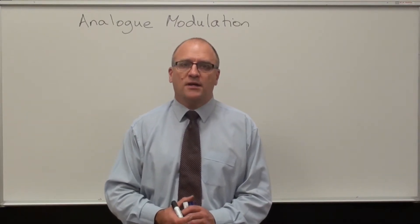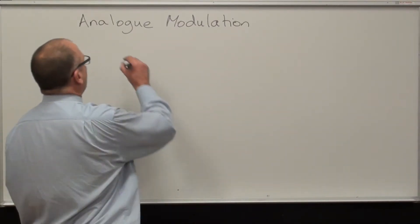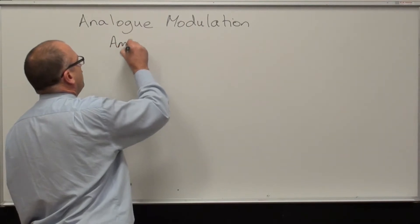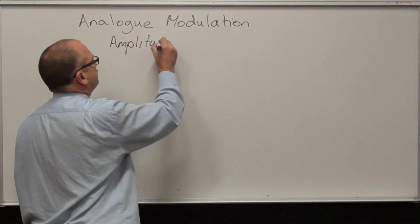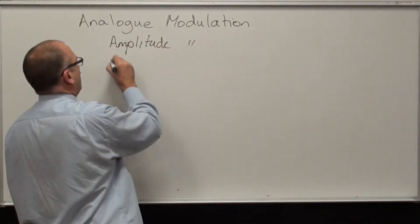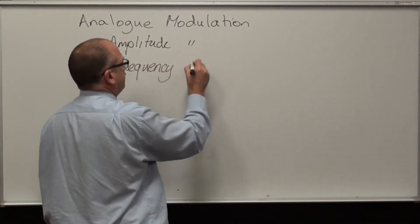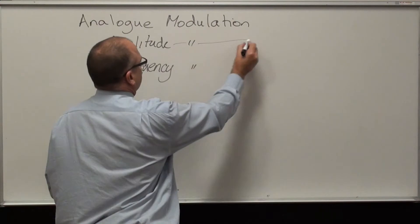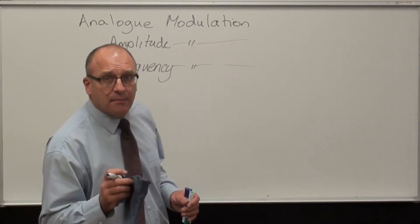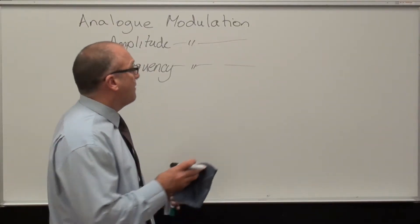There's two forms of analog modulation in the syllabus. One of them is amplitude modulation. The other one is frequency modulation. Let's just have a look at AM amplitude modulation of a radio.